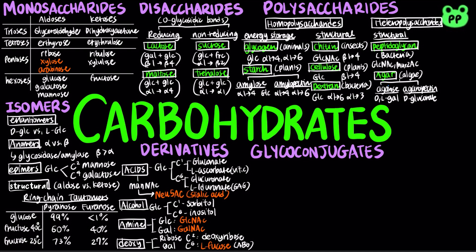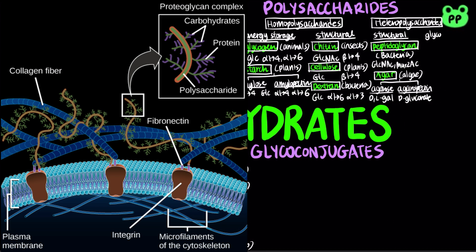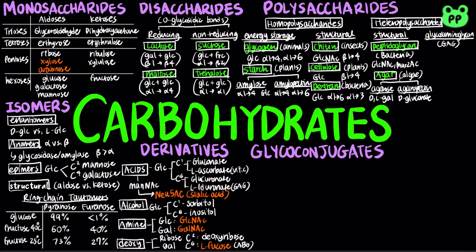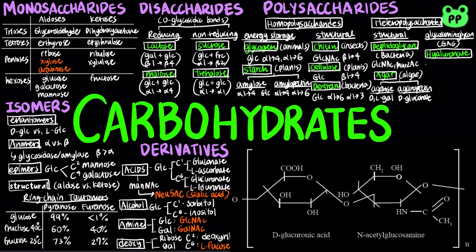Glycosaminoglycans are heteropolysaccharides found in the extracellular matrix, which holds cells together and provides a porous pathway for diffusion of nutrients and oxygen to individual cells. They are composed of repeating disaccharide units. One of the two monosaccharides is always either GlcNAc or galactose; the other is usually a uronic acid. Hyaluronate, or hyaluronan, contains alternating residues of GlcNAc and glucuronate. It is a component of the extracellular matrix of cartilage and tendons, serves as a joint lubricant, and gives the vitreous humor of the vertebrate eye its jelly-like consistency.